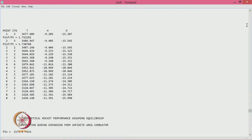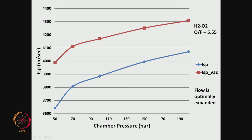This is for liquid propellants. The same information is shown in a graph with chamber pressure on the X-axis and ISP on the Y-axis. There are two ISP curves: sea level ISP shown in blue and vacuum ISP shown in red, which is higher. Both are for hydrogen and oxygen at O/F of 5.55 with optimally expanded flow. As pressure increases, both sea level and vacuum ISP increase.